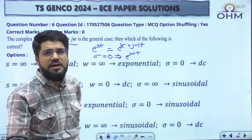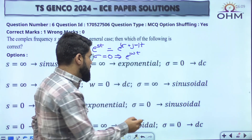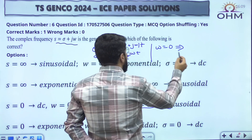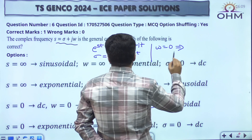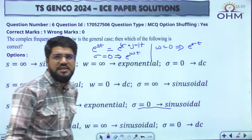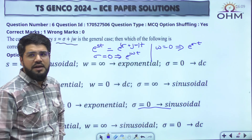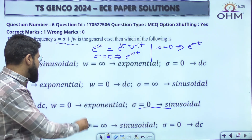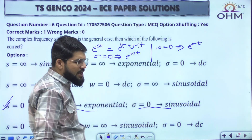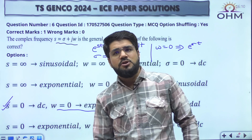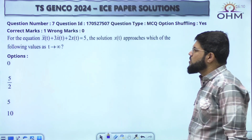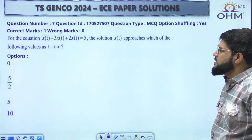e power j omega t splits into cos(omega t) plus j sin(omega t), which is the sinusoidal term. On the other hand, if you put omega equal to zero, you are left with the real exponential function e power sigma t. That is the exponential term for omega equal to zero. Since zero frequency corresponds to DC, the correct answer matching all our calculation is option number C.